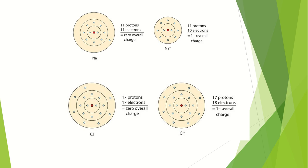As we know that the atomic number of sodium is 11. The electronic configuration of sodium would be 1s2, 2s2, 2p6, and 3s1. So there is one electron in the outermost shell of sodium, meaning it has 11 protons as well as 11 electrons. Sodium has a tendency to lose its outermost electron and change its electronic configuration to 1s2, 2s2, and 2p6. Because of the loss of this electron it bears the positive charge.